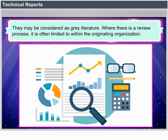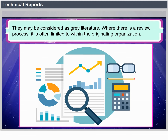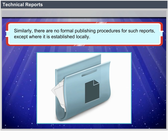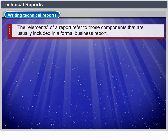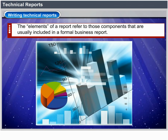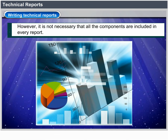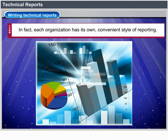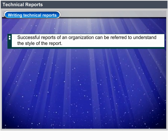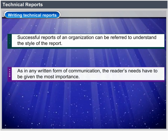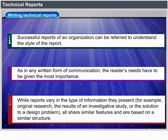Where there is a review process for technical reports, it is often limited to within the originating organization. Similarly, there are no formal publishing procedures for such reports except where established locally. The elements of a technical report are those components usually included in a formal business report. It is not necessary that all components are included in every report — each organization has its own convenient style. While reports vary in the type of information they present — for example, original research, the results of an investigative study, or the solution to a design problem — all share similar features and are based on a similar structure.